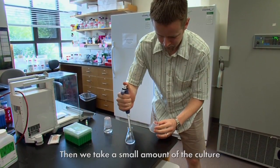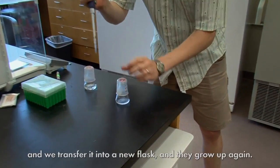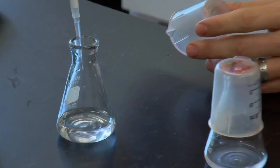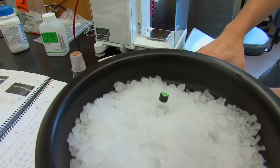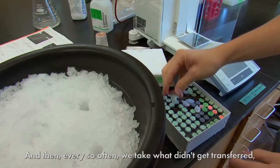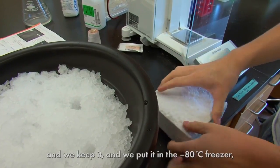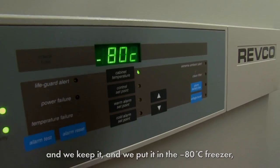Then we take a small amount of the culture after they've finished growing and we transfer it into a new flask and they grow up again. And then every so often we take what didn't get transferred and we keep it, and we put it in the minus 80 freezer and label that.